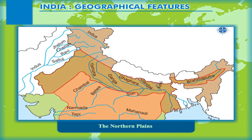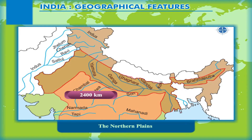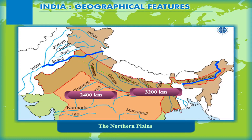The plains have an extent of about 2400 km, stretching from River Satluj in the west to River Brahmaputra in the east. If we include the area marked as the Indus Plains, the west-east extent is about 3200 km.